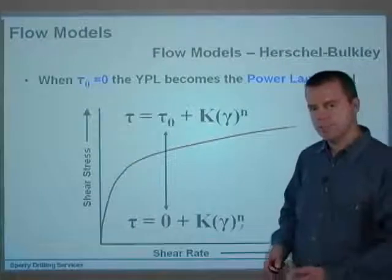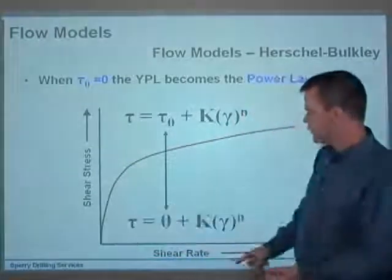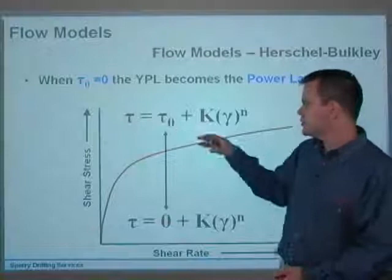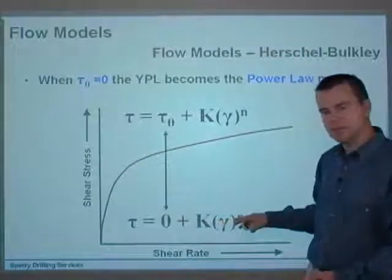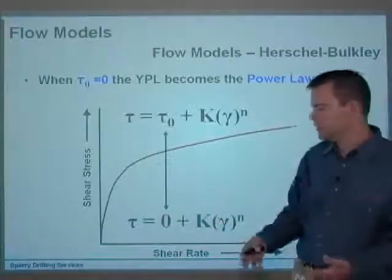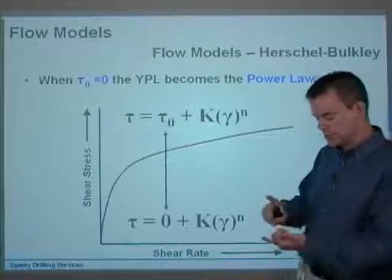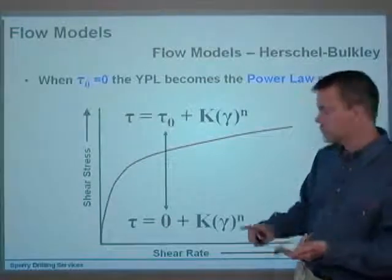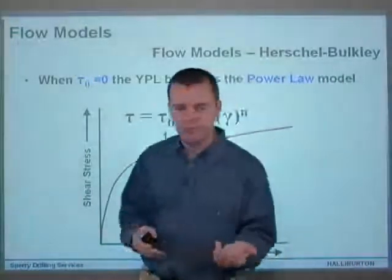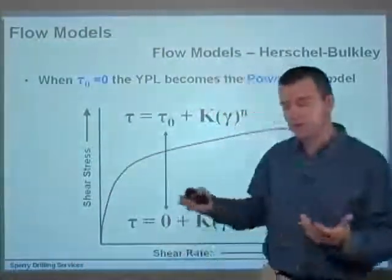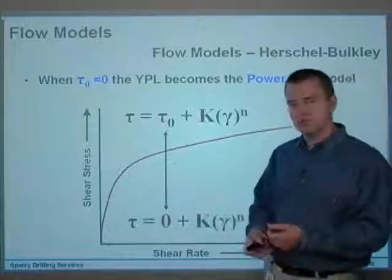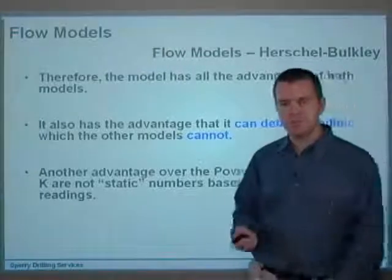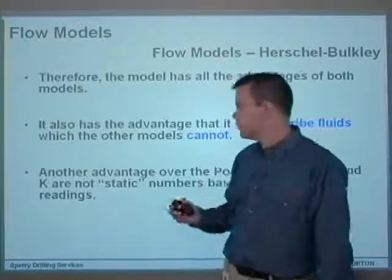It also describes a power law fluid: if tau-zero equals zero and there is no yield point, then this becomes the power law — tau equals K times gamma to the power of n. So it can describe a Bingham plastic fluid, a power law fluid, and obviously a Newtonian fluid. But crucially, it can also describe everything between a power law fluid and a Bingham plastic fluid, covering all the bases. The model has all the advantages of both, and can describe fluids which the other models can't.